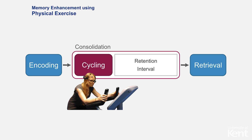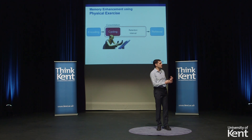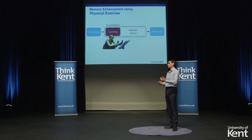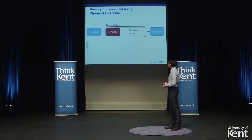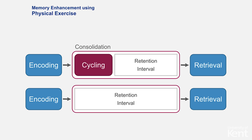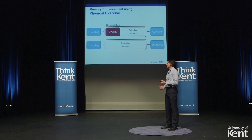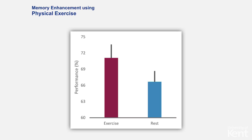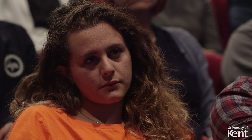During retrieval, participants recognize stimuli they saw before — we mix 80 new images with the original ones and ask them to identify which they saw before. In another session, participants memorize a new set of stimuli, then have one and a half hours of rest instead of cycling, followed by the retrieval phase. The interesting result was that exercise improved memory performance significantly more than the rest condition. This shows that even 30 minutes of physical exercise is enough to produce improved memory performance, which is extremely exciting.